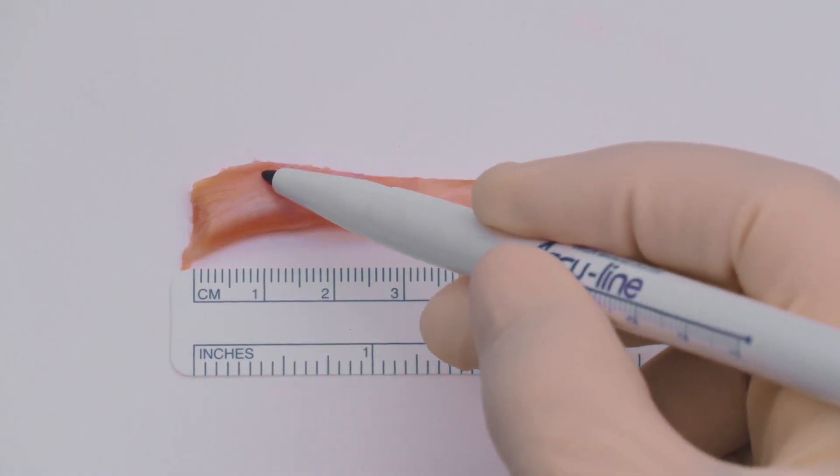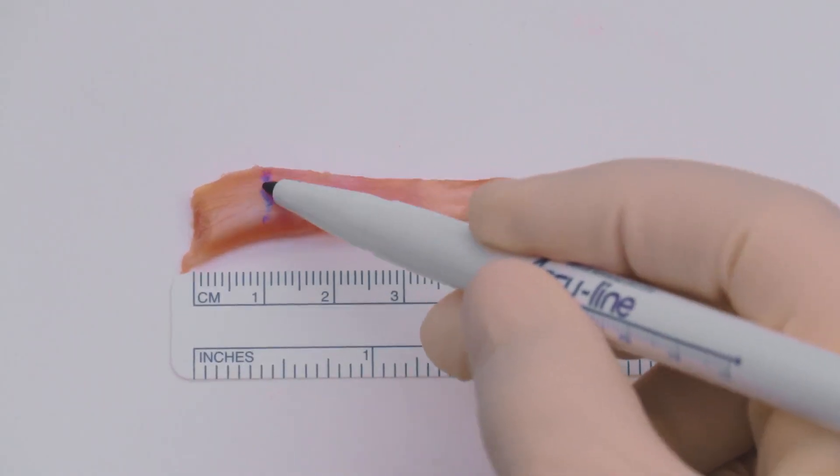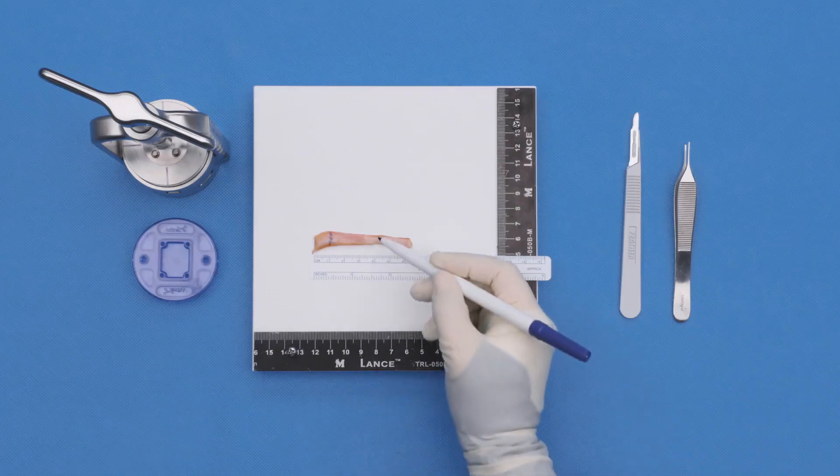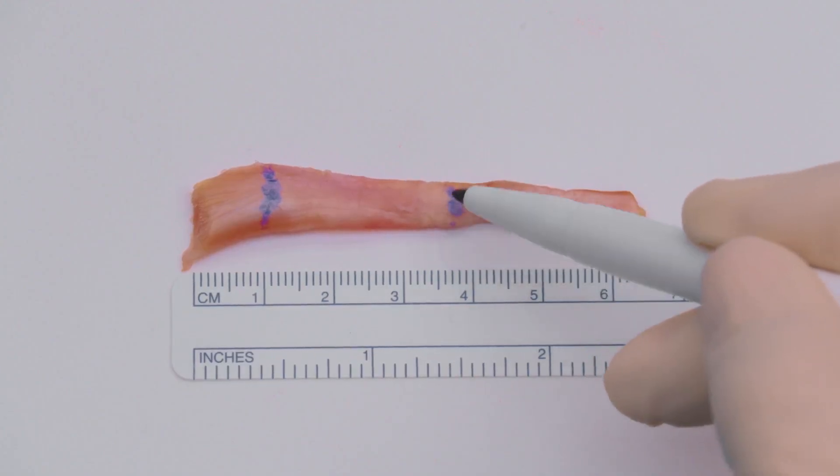For the graft, harvest the biceps tendon through either a super-pec or sub-pec approach. It is recommended to harvest at least 40 mm of tendon.